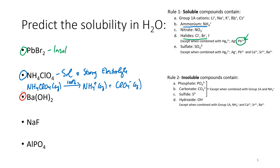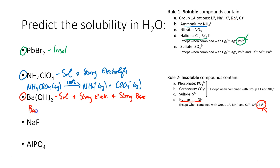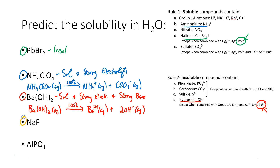How about this next one? Barium hydroxide. All hydroxides are insoluble, but we've got some exceptions, and the one that we have is barium. So this would be soluble and a strong electrolyte, and it's also a strong base. Barium hydroxide dissociates 100% into a barium cation and two hydroxide anions.